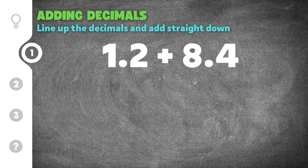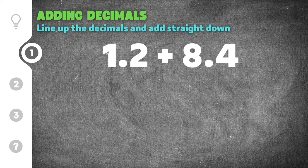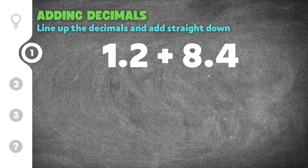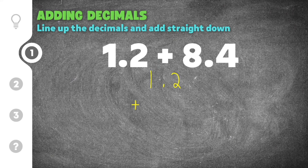Alright, let's jump down to our first practice problem. For this problem we need to add the decimals together, and the two decimals we have are 1.2 plus 8.4. I'm going to rewrite these so that the decimal points are lined up vertically. So we have 1.2 and we're adding that to 8.4.